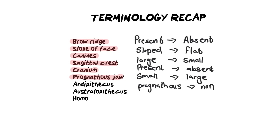Finally, the three hominid genus groups are Ardipithecus, Australopithecus, and Homo. You also need to know the species names: Ardipithecus ramidus, Australopithecus afarensis and africanus, and Homo sapiens, Homo erectus, and Homo habilis. If you liked this video, don't forget to give it a thumbs up and make sure you're subscribed — I post every Tuesday and Thursday, and I'll see you all again soon. Bye!